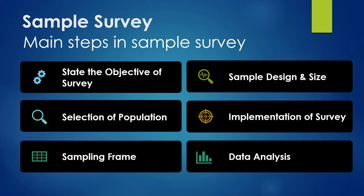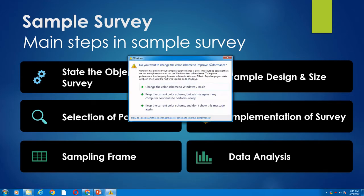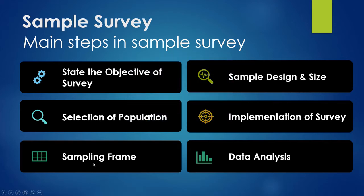The main steps in sample survey are: first, state the objective of the survey; second, select the population relevant to your question; third, sampling frame; fourth, sample design and sample size; fifth, implementation of survey; and finally, data analysis.